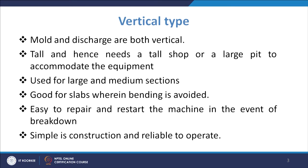In the vertical type, you need a tall shop, equipment capable of handling the loads, a tundish at a higher level, and the mold at a higher level. The strand comes down, and you must ensure complete solidification. A cutting facility is provided so that you can cut the strand at a particular point and then take it out. Basically you need a space that is tall enough to accommodate the equipment.